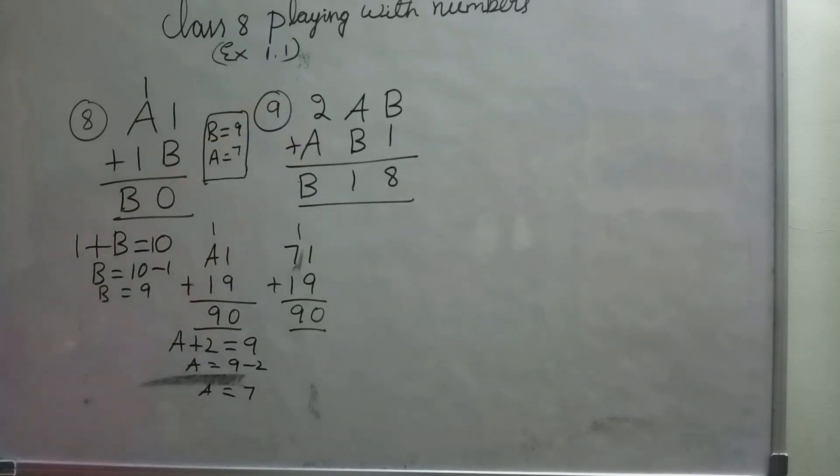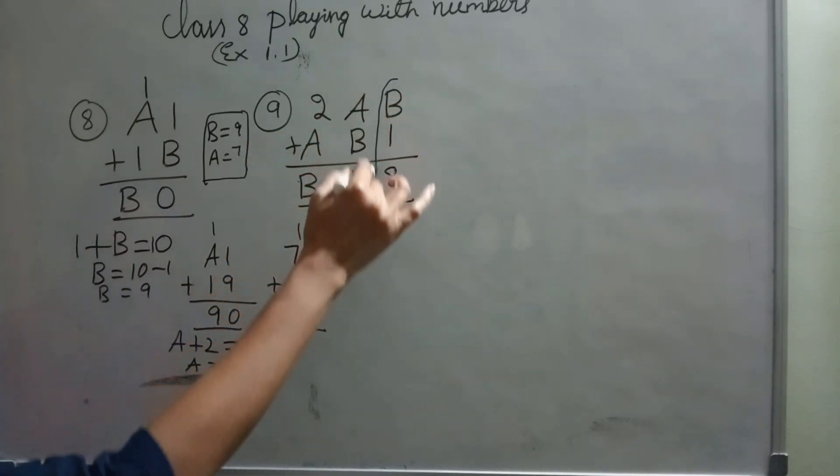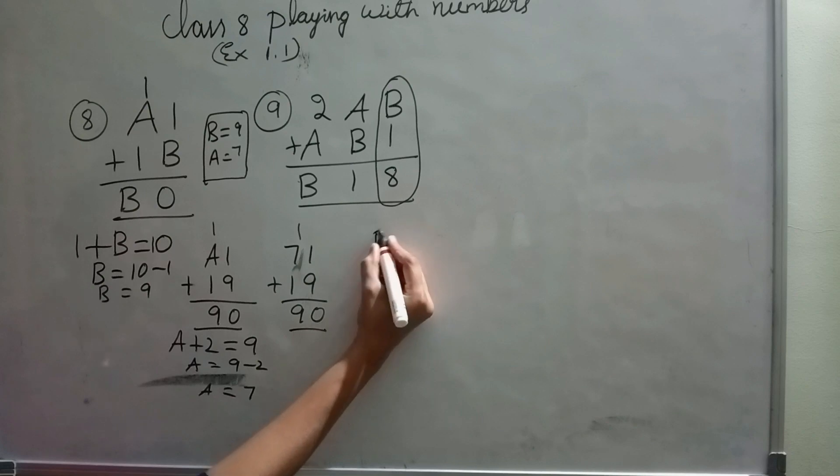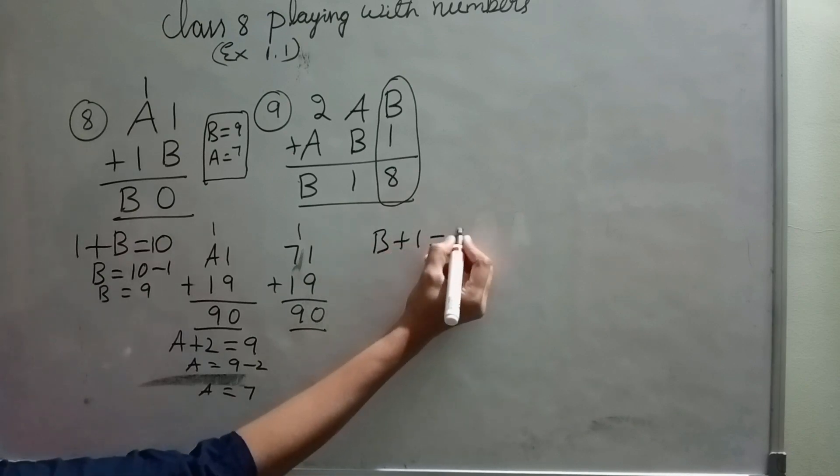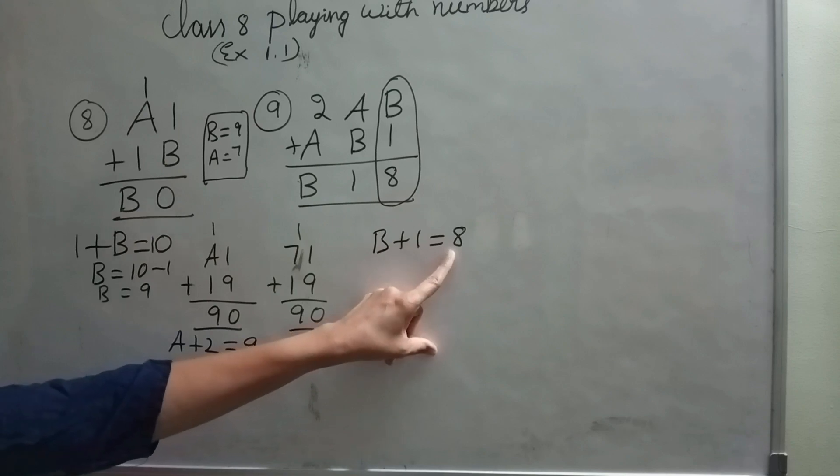Here, 2AB plus AB1 equals B18. That means if I add 2AB to AB1, I should get B18 as answer. First, we will solve this one. B plus 1 equals 8. Don't confuse here. This is not 18, this is 8 only. Because,